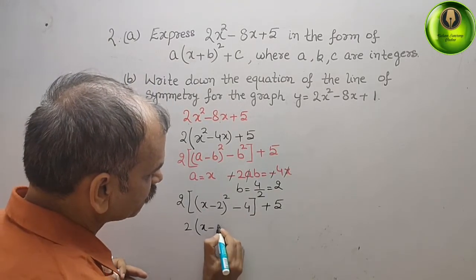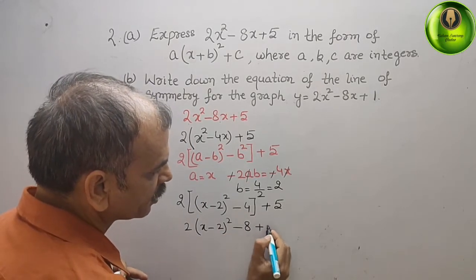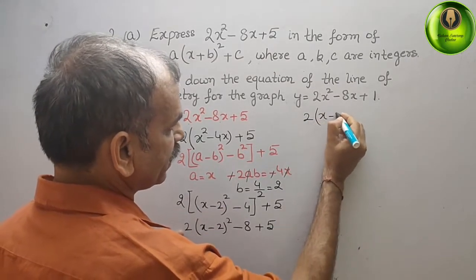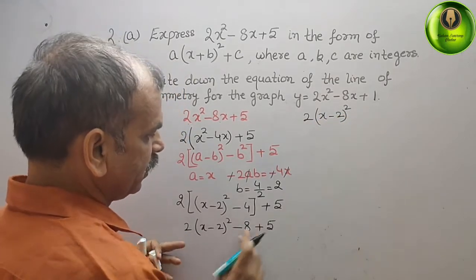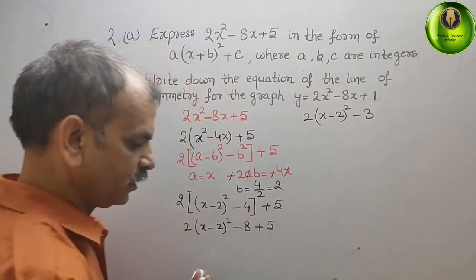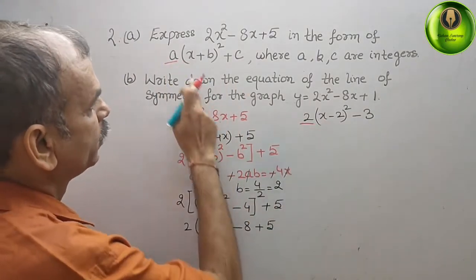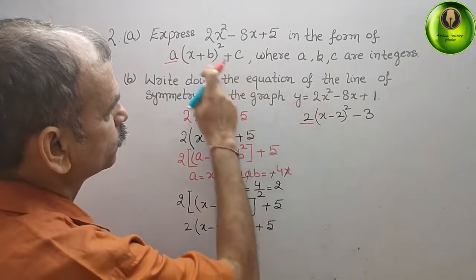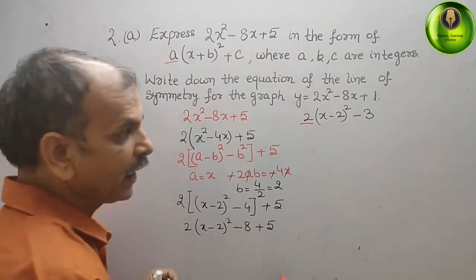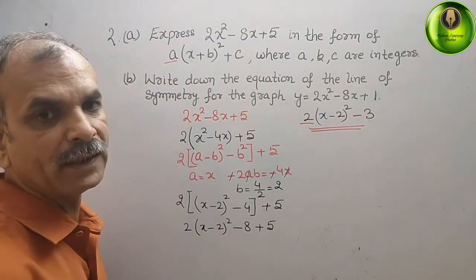Opening the big bracket we get 2(x minus 2)² minus 2 times 4 is 8, plus 5. That gives us 2(x minus 2)² and minus 8 plus 5 is minus 3. You can see this is in the same format: a is 2, b is minus 2, and c is minus 3.